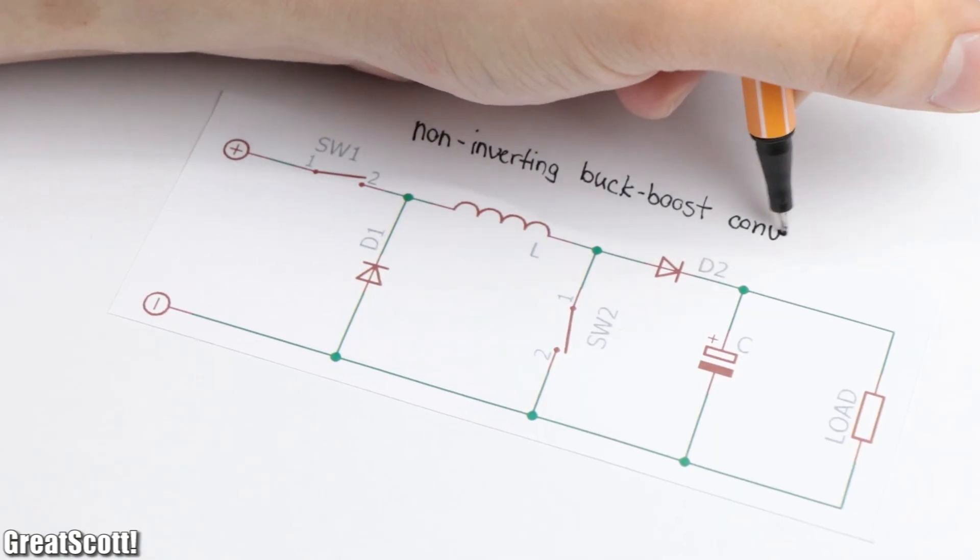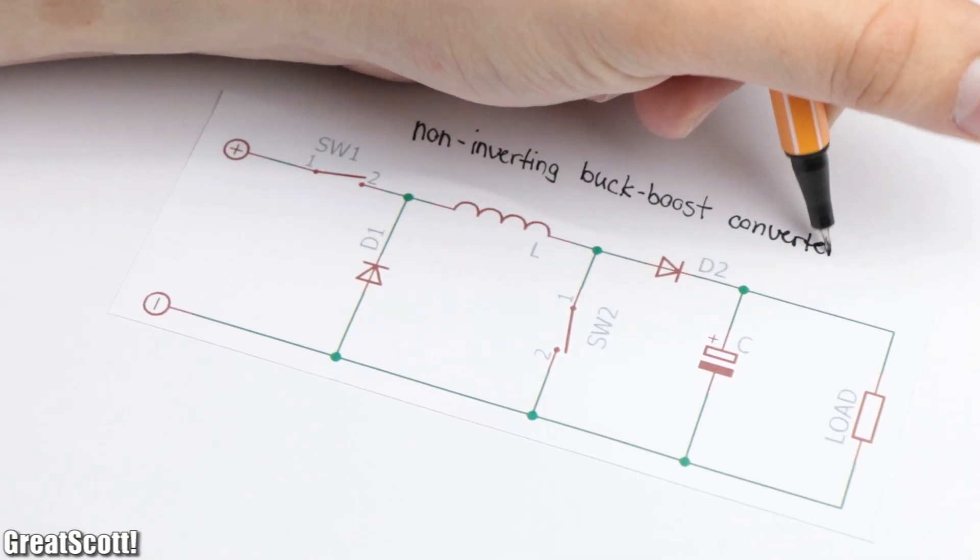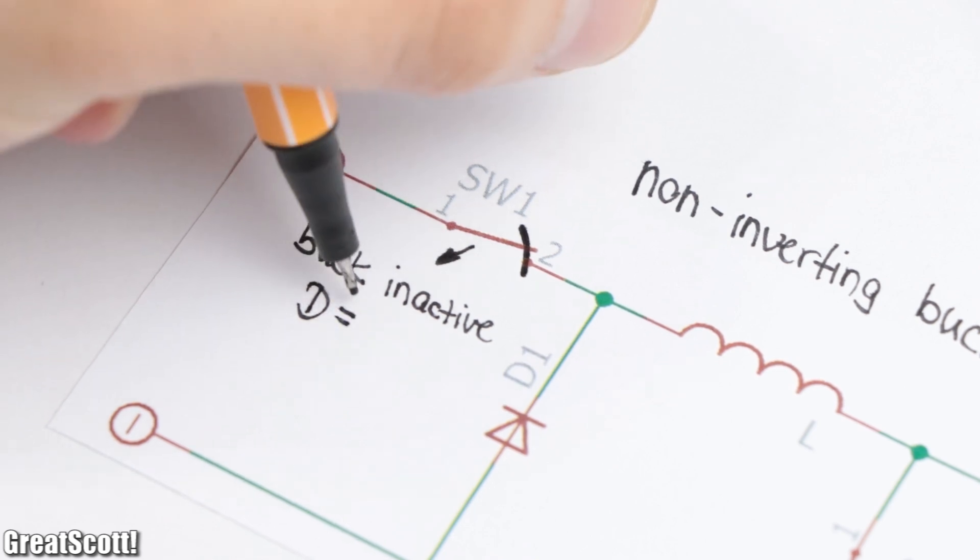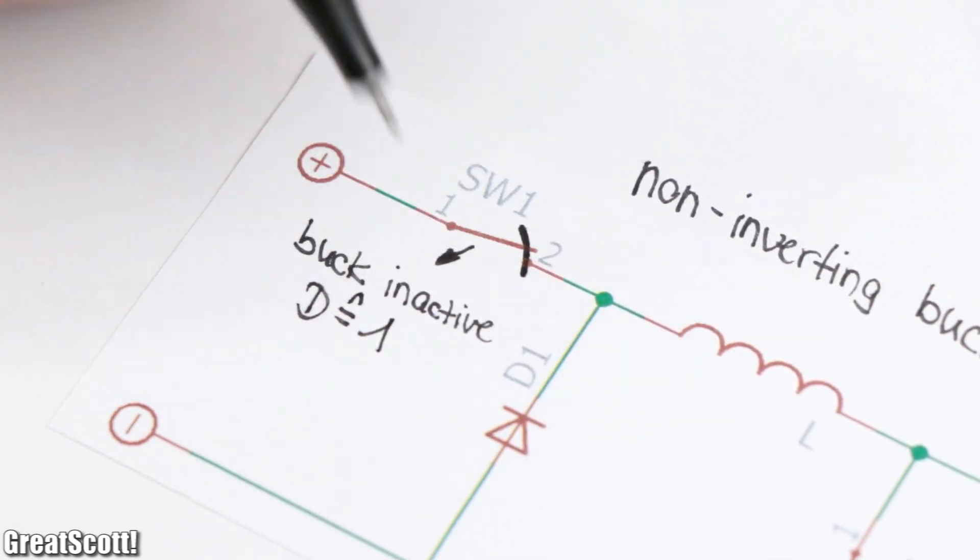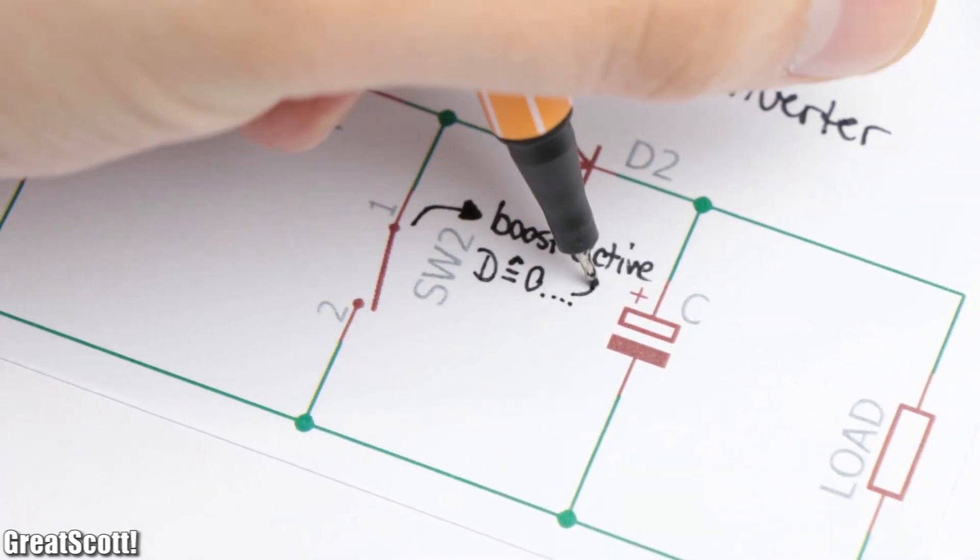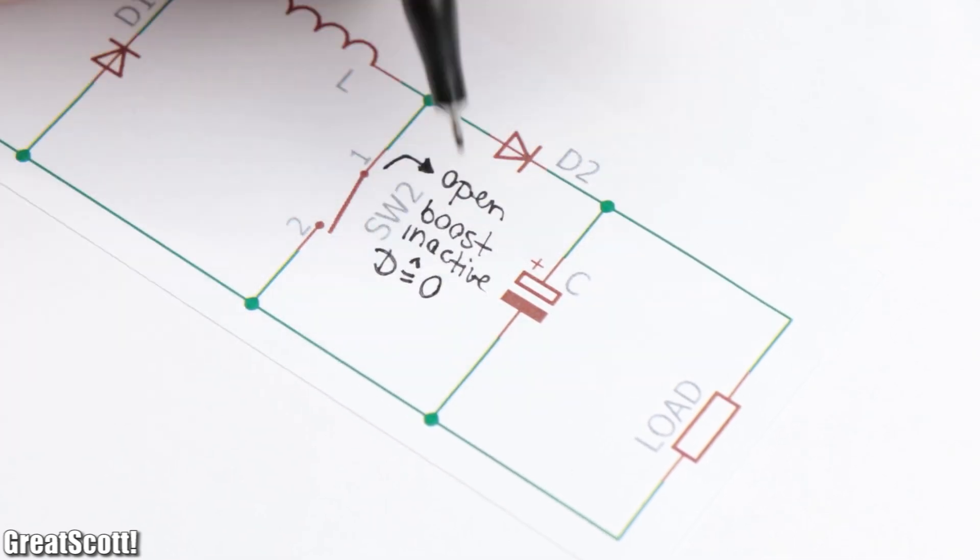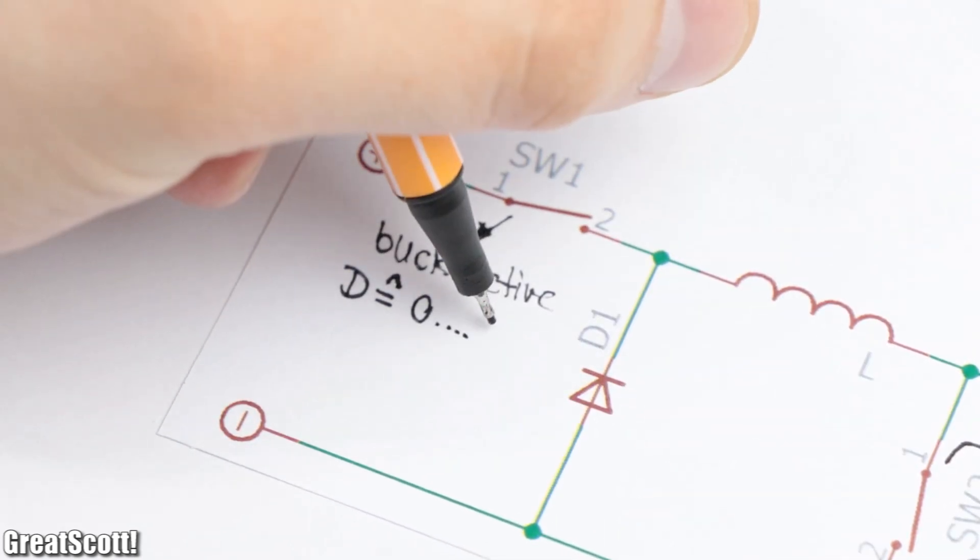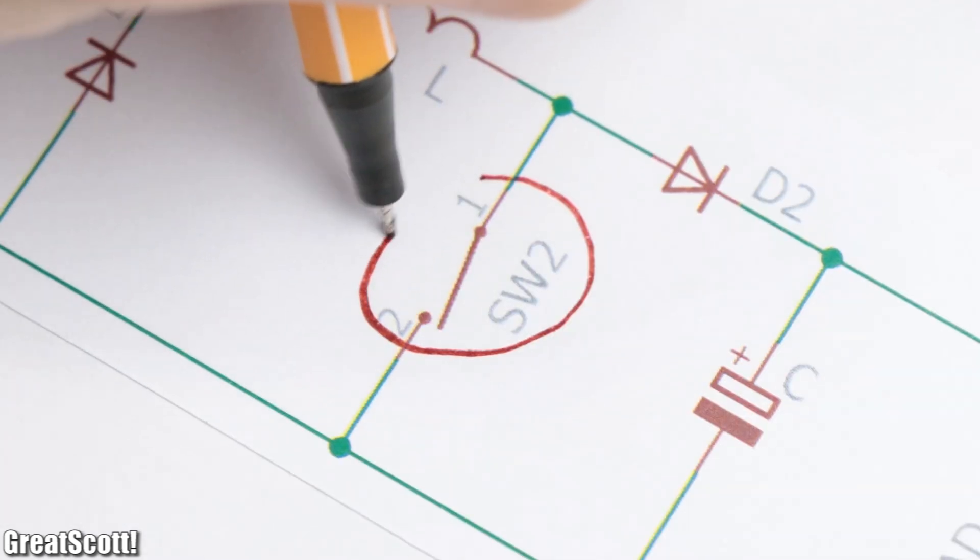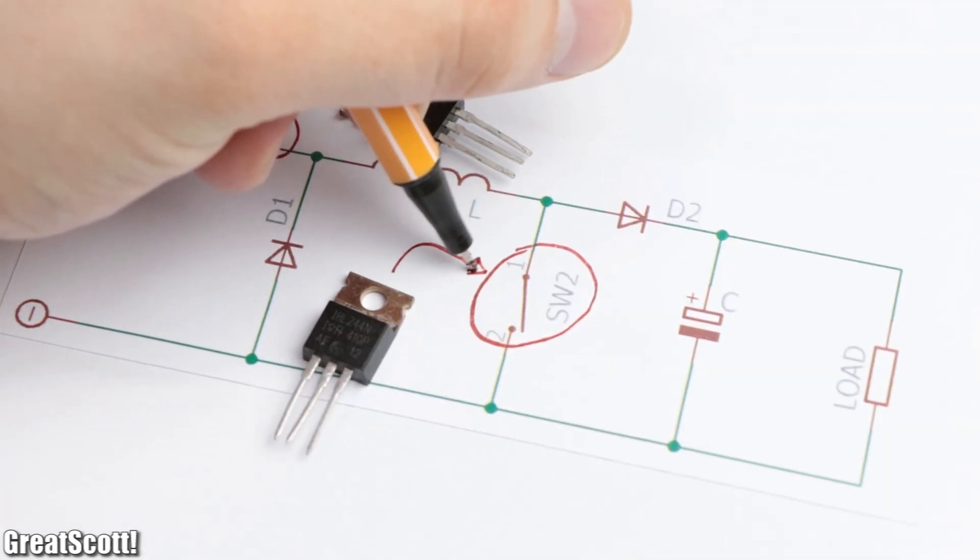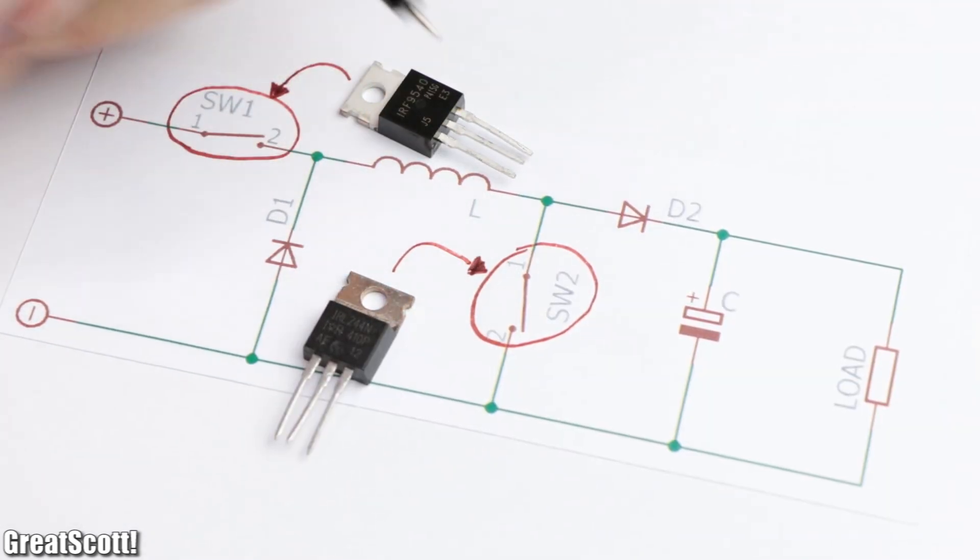When switch 1 is closed, the buck portion is inactive and switch 2 controls the step-up factor. And if switch 2 is open, the boost portion is inactive and switch 1 controls the step-down factor. But since we need to control two switches, two MOSFETs, this is not the simplest circuit yet.